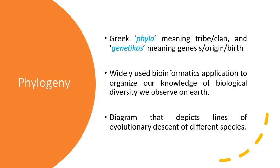A phylogenetic tree is a diagram that depicts lines of evolutionary descent of different species. Using this tool, we can study how different species evolved or originated and how they are linked to other species. Just like a normal tree that starts with a seed, the farther you go from the root, the more distantly related the leaves will be — this is how we study phylogenetics in biology.